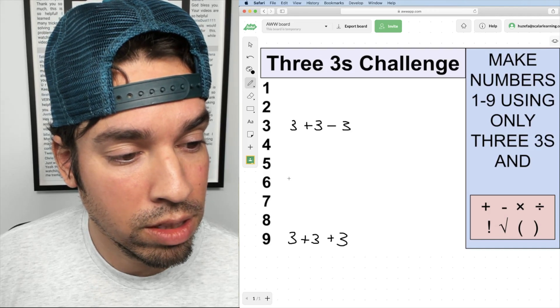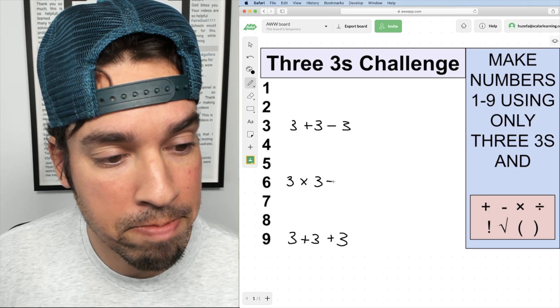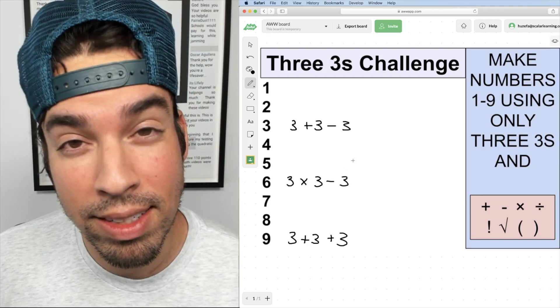Next I'm going to go to six, and with six what I'm going to do is three times three which is nine minus three, and now back down to six.